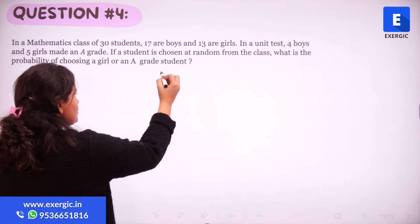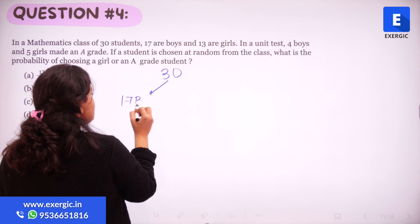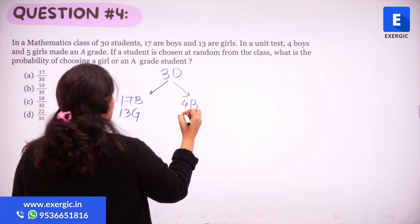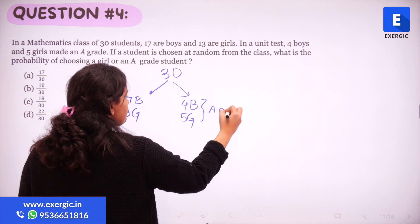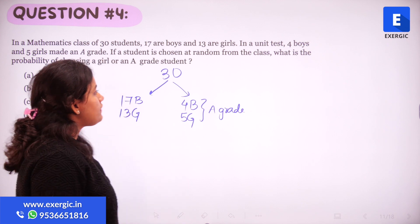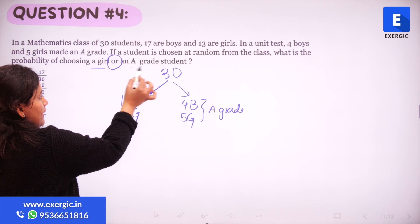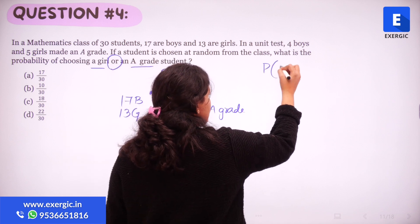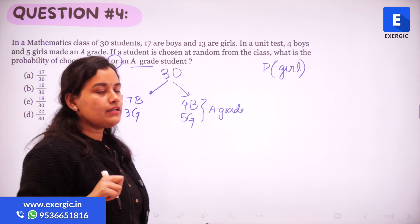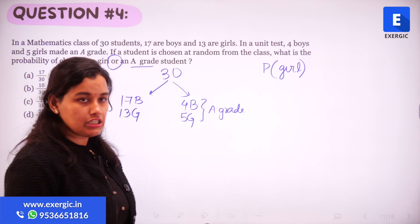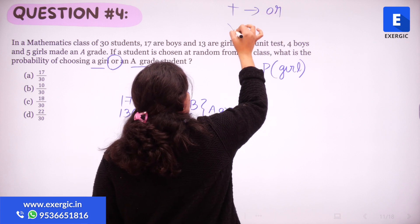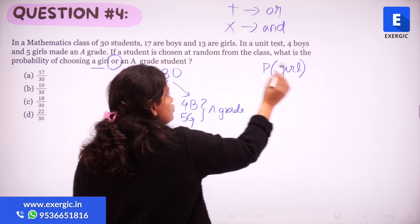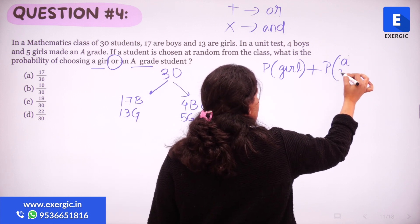So let's see — we have 30 students in total, of which 17 are boys and 13 are girls. Also, we know that out of these 30, 4 boys and 5 girls got an A grade. Now we want to find out the probability of choosing a girl or an A grade student. The important word here is 'or'. So what does 'or' mean? We know 'or' means addition and 'and' means multiplication. So here we want 'or', so we're going to add the probability of selecting a girl with the probability of selecting an A grade student.